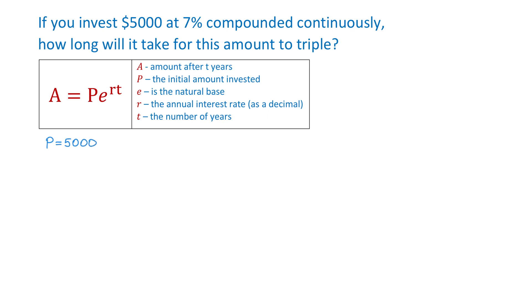r is 7% or as a decimal this is 0.07, and because we want this amount to triple, then A will be equal to 15,000.